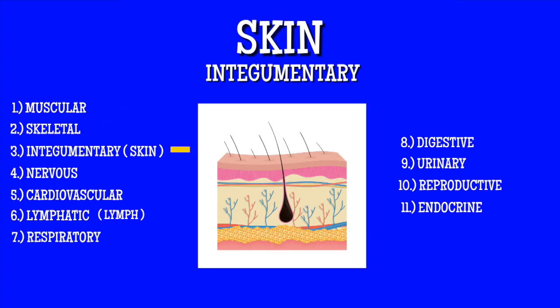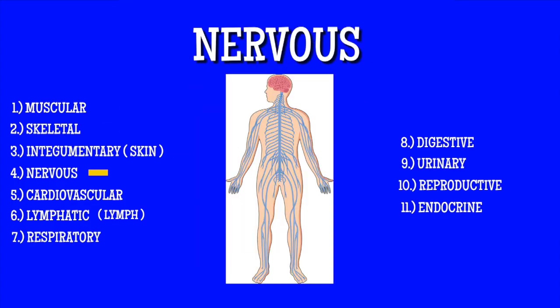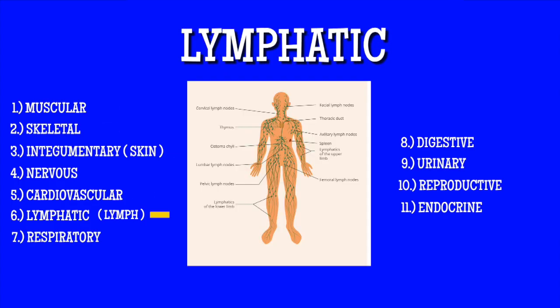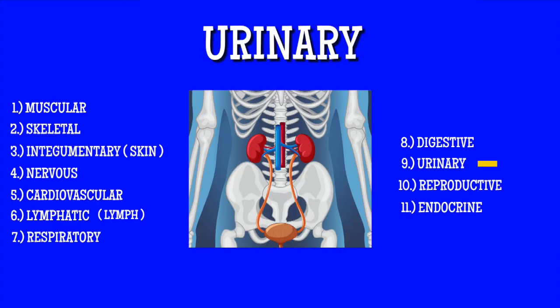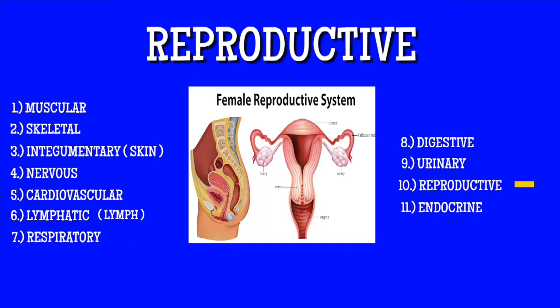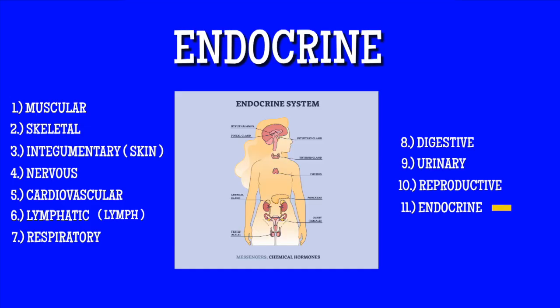Muscular, skeletal and skin, integumentary, nervous, cardio and limb, lymphatic, respiratory, digestive, urinary, reproductive and the endocrine.